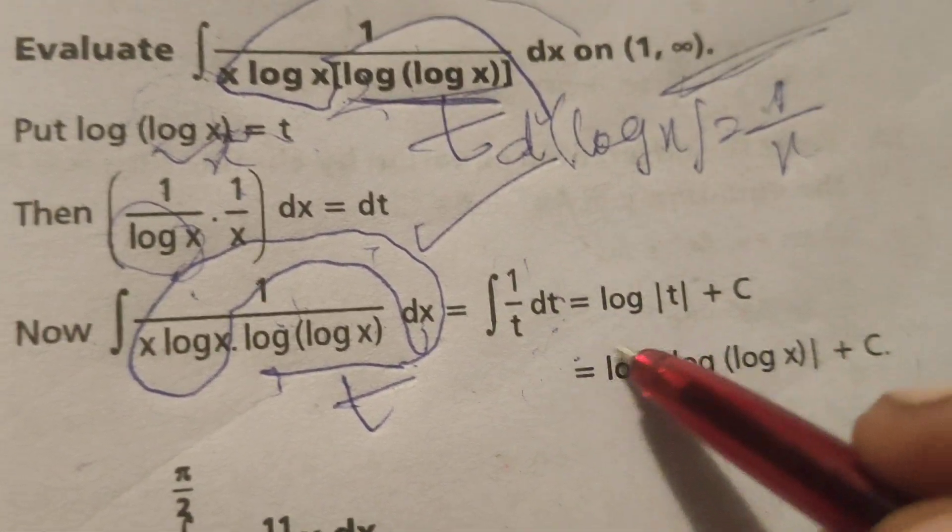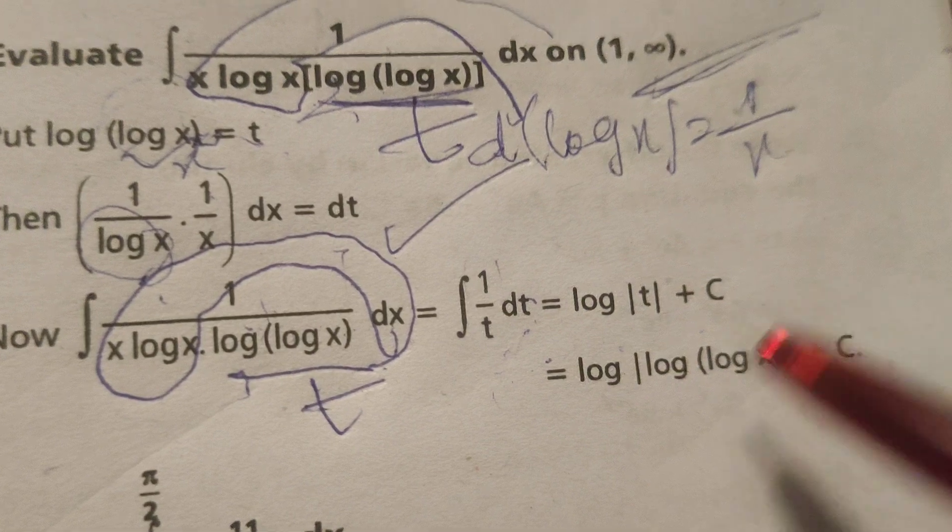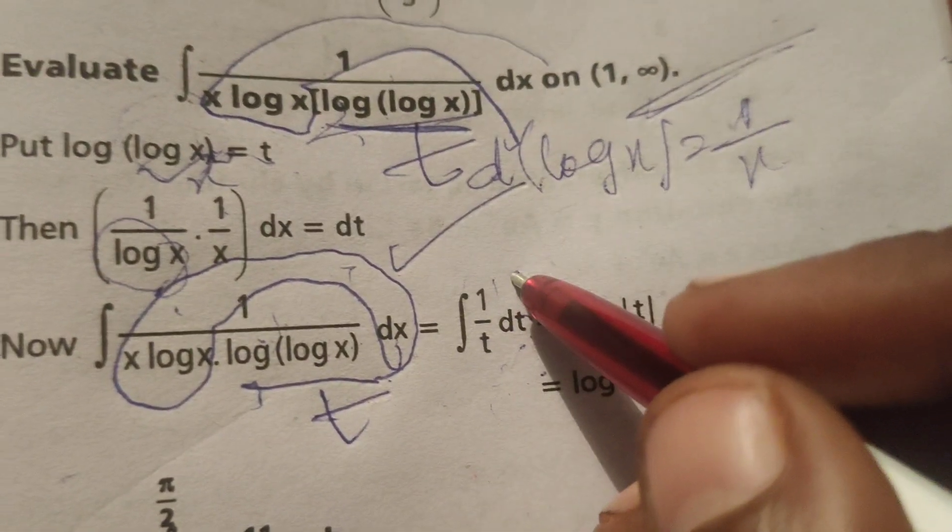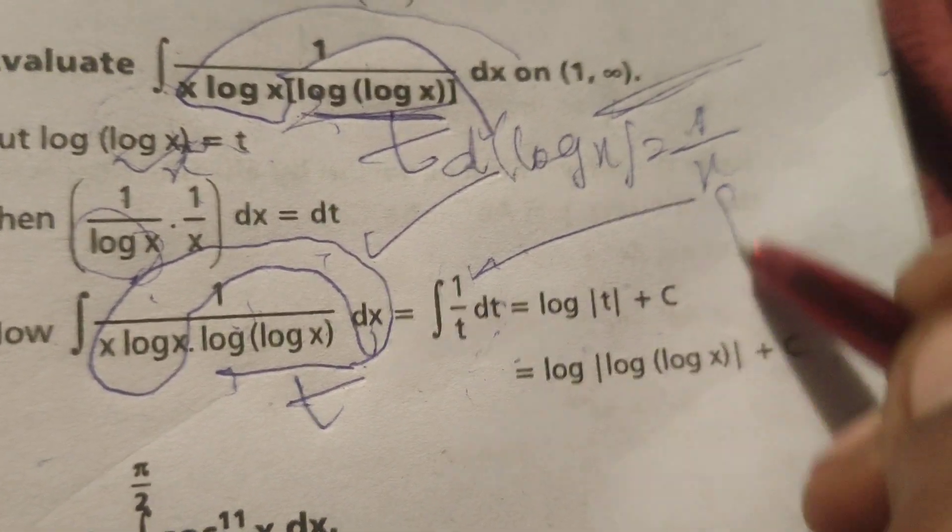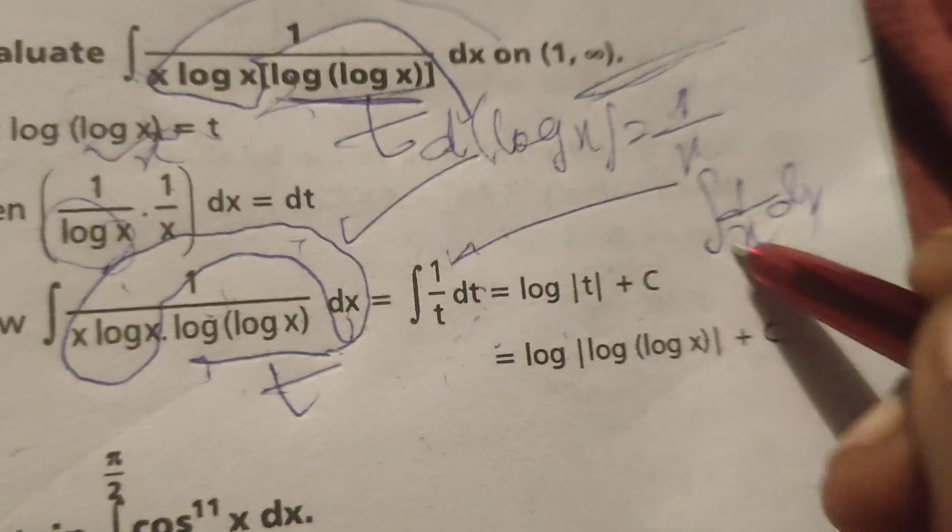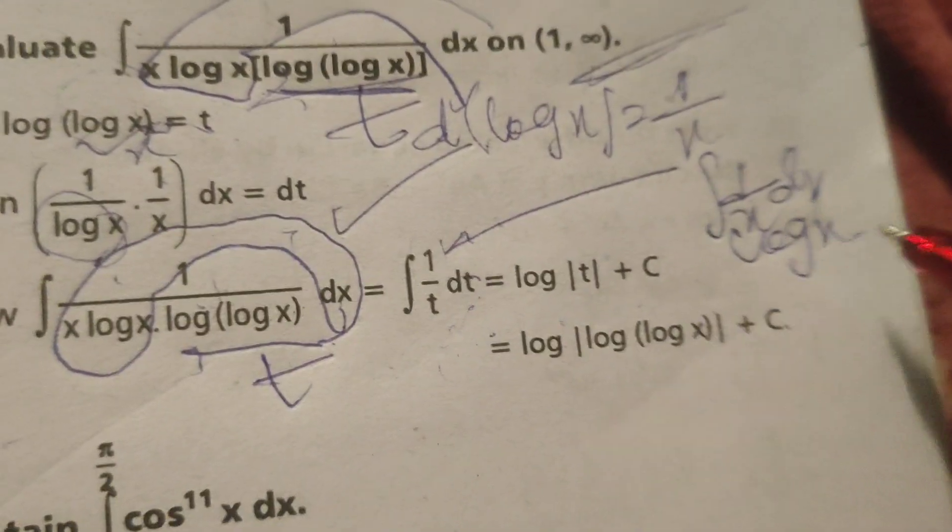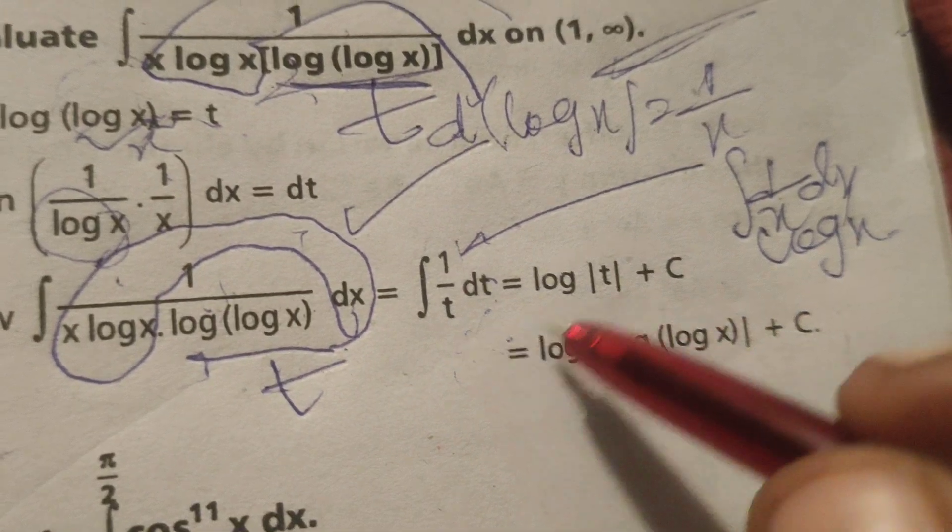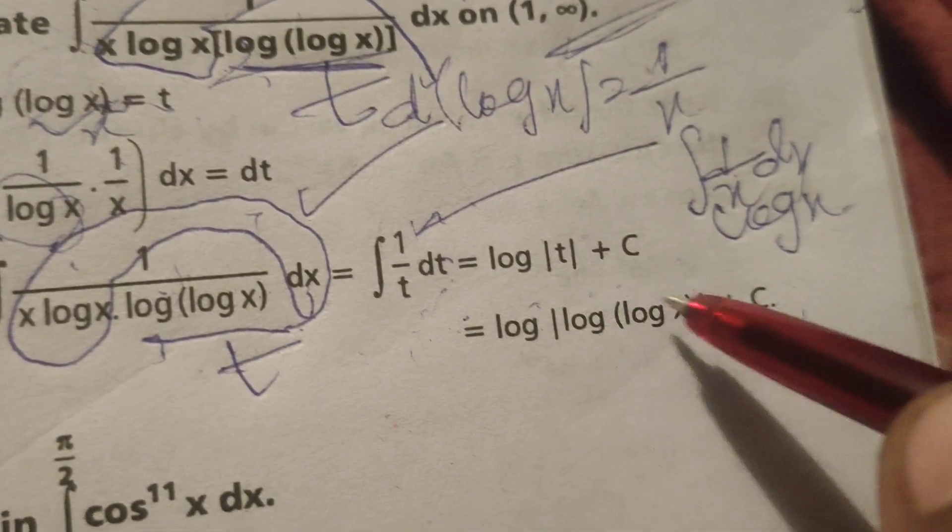Integral of 1 over t dt equals log t plus c. We already know the integral of 1 over t, or 1 over x dx, is the log x formula. Therefore, here in place of x, t is there, so log modulus of t plus c.